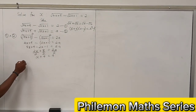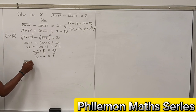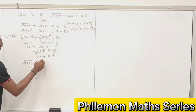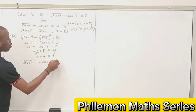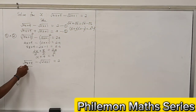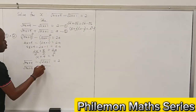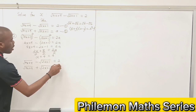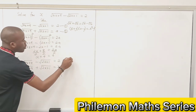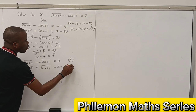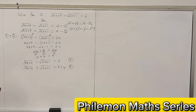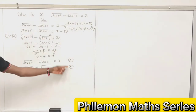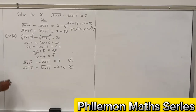So a is x plus 4. We'll go back to equation 2 and substitute a as x plus 4. So let's repeat: equation 1 is root of 4x plus 9 minus root of 2x plus 1 equals 2, and equation 2 becomes root of 4x plus 9 plus root of 2x plus 1 equals x plus 4. Let's call this equation 3 and equation 4. Now we are going to add equation 3 and equation 4 together.